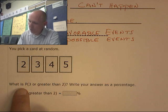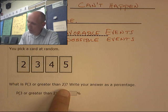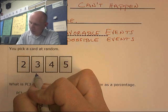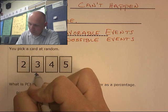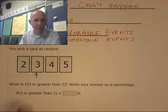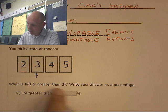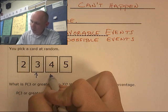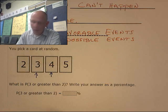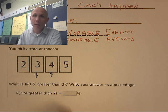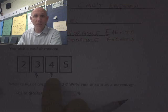A 3 or something greater than 2. Would this work right here? Well, that's a 3, so that's a good outcome. I like that outcome. A 3 or greater than 2? Well, a 4. A 4 is not a 3, but it's greater than 2, so this is a favorable outcome.